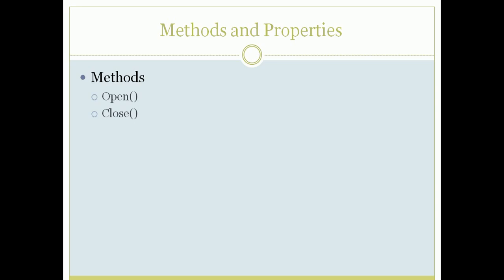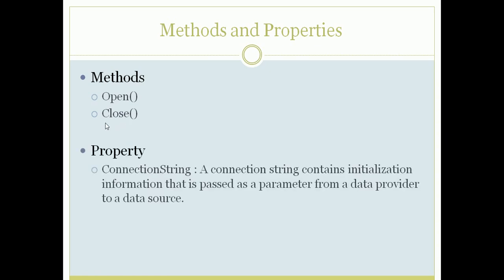Before that, let us see some important methods and properties. The two important methods of the connection class are Open and Close. Once we create a connection class we have to open the connection, otherwise we cannot execute commands on the database. Once we are done with all operations we have to close the connection. The most important property is ConnectionString, which contains all the initial initialization information passed as a parameter from the data provider to the data source.